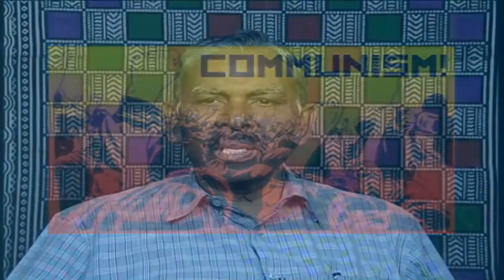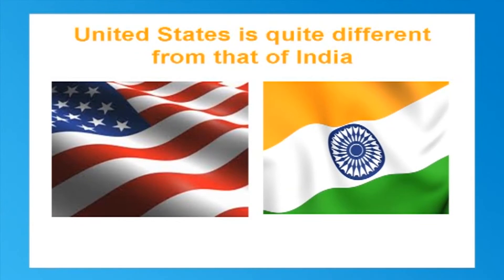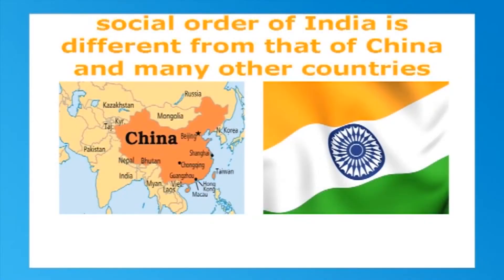The political order also forms part of the social order. The social order may also differ. For example, the social order of the United States is quite different from that of India, although both countries are democracies. Similarly, the social order of India is different from that of China and many other countries. Thus, the social order may differ from country to country. The prevailing social order of a society at any time depends on the interactions of the various components of the society over centuries. The prevailing social order in India is definitely different even from what it was a century or two centuries back.